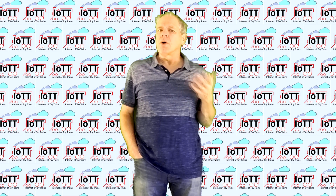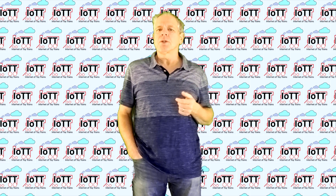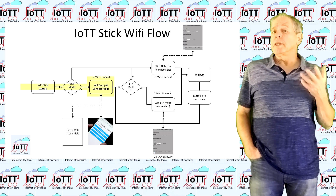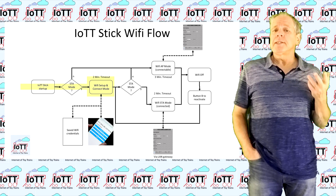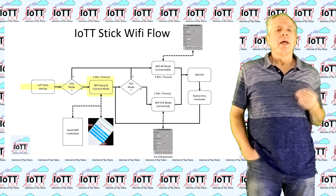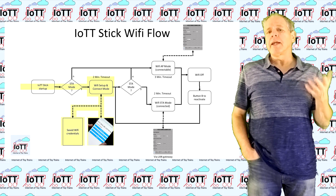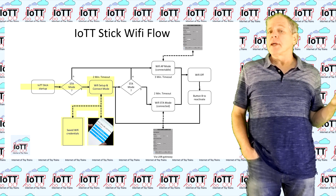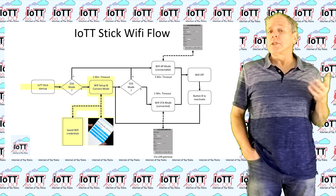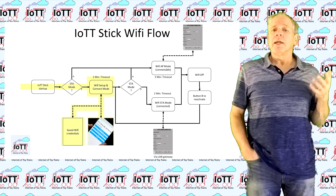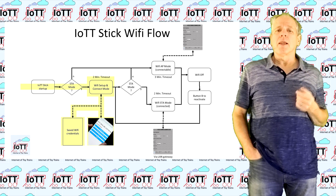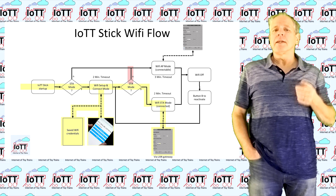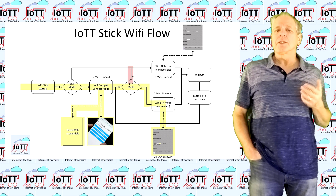Access point mode is convenient if there is no Wi-Fi to connect to, though the main limitation is that only a limited number of devices can connect to the stick at the same time. The more common mode, and the default mode for the stick as shipped, is station mode. In this mode the stick tries to connect to an available Wi-Fi access point using stored settings. If there are no settings or the stick cannot connect, it automatically brings up the captive portal, allowing you to use a smartphone to enter Wi-Fi settings or switch to access point mode.